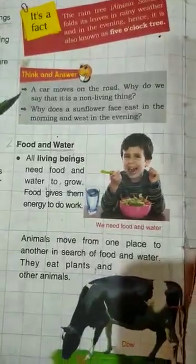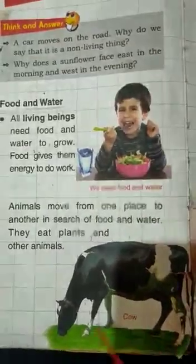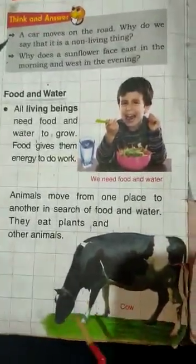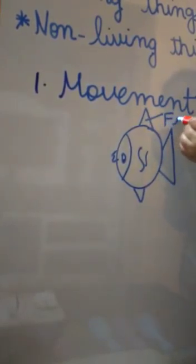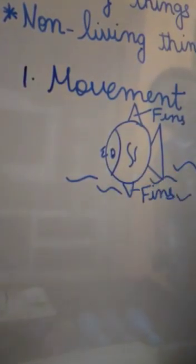Animals move with the help of their legs. Do you know how many legs animals have? Four legs. Similarly, fish move with the help of fins. I am drawing a fish here. Fish swims in water with the help of fins.